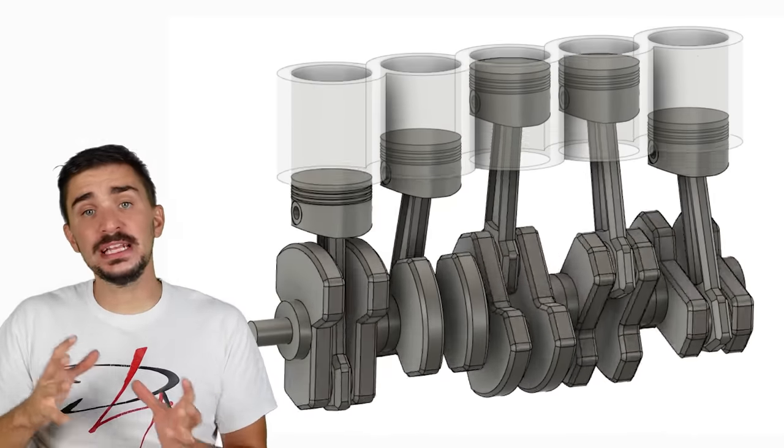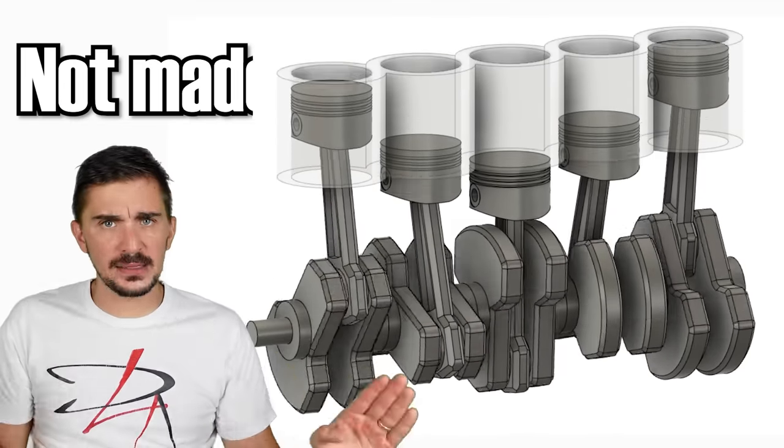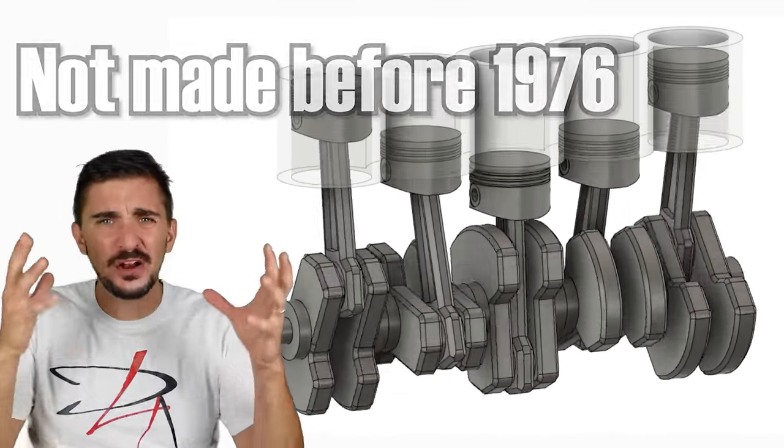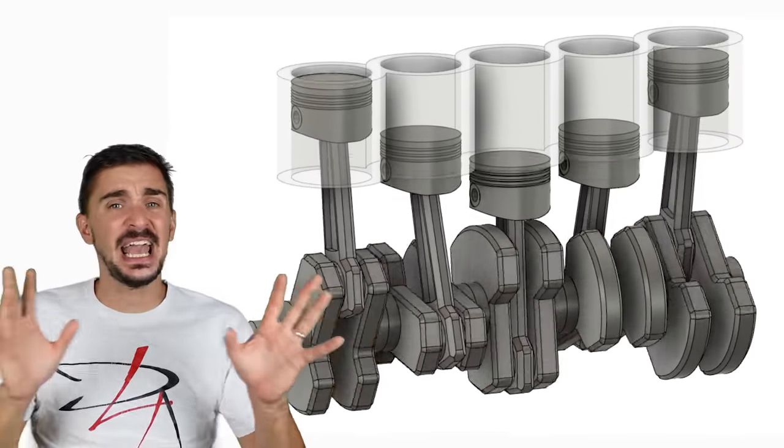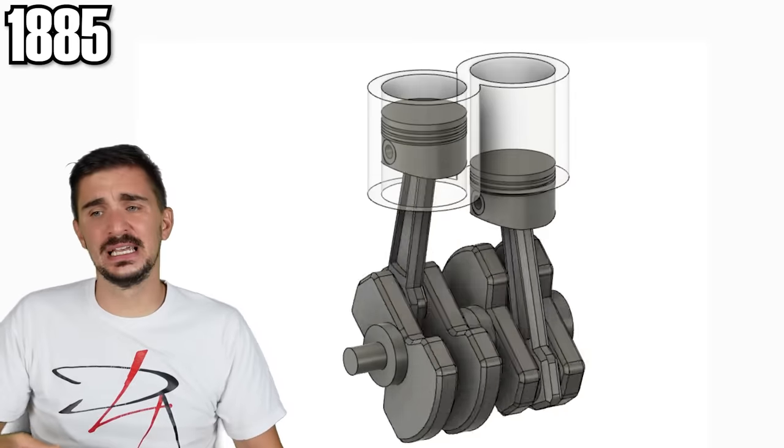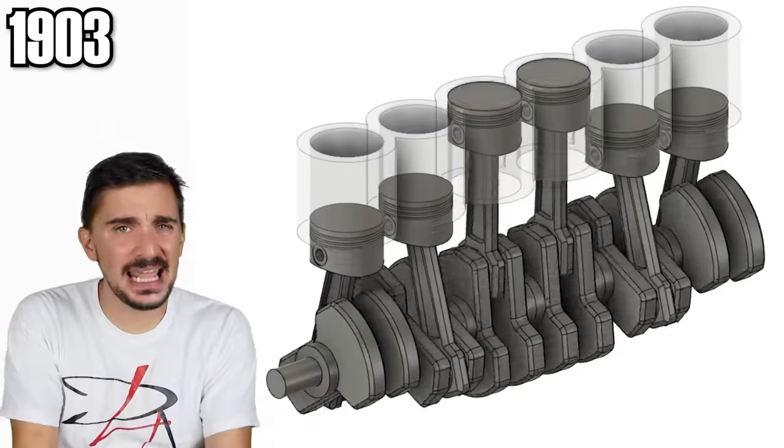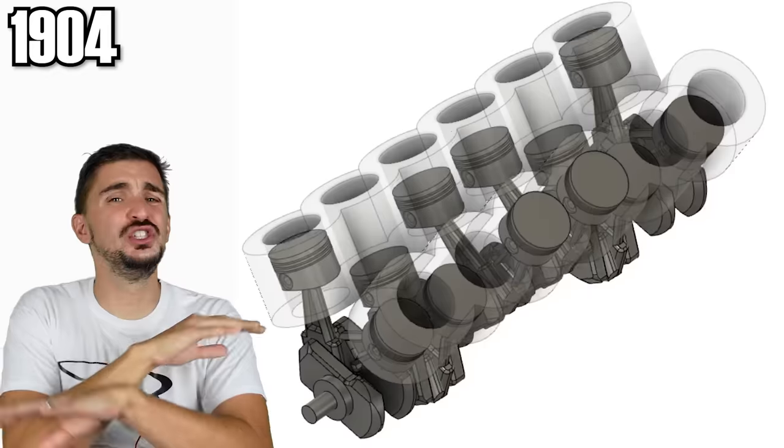But what's more interesting than its rarity is the fact that gasoline inline-5 engines were not made before 1976. Now, we made pretty much every configuration imaginable long before 1976. Everything from singles to all kinds of twins, to inline-3s, inline-4s, inline-6s, even inline-8s, V6s, V8s, V12s, you name it.